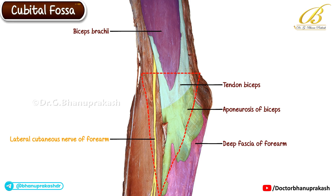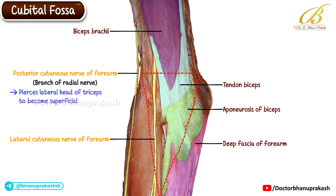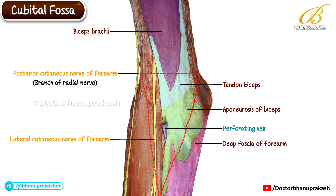You can also observe another cutaneous nerve here: the posterior cutaneous nerve of the forearm, which is a branch of the radial nerve. This nerve pierces the lateral head of the triceps to become superficial and supplies sensation to the back of the forearm extending up to the wrist. Additionally, you can notice the cut ends of a perforating vein along with the basilic vein in this region.